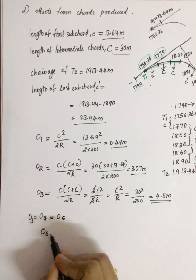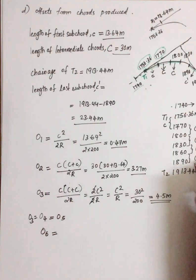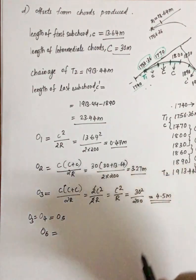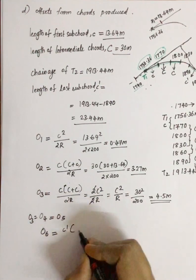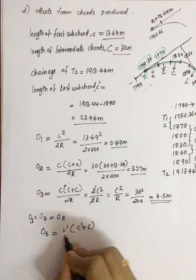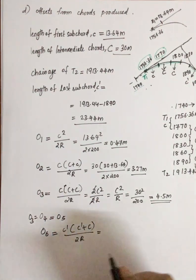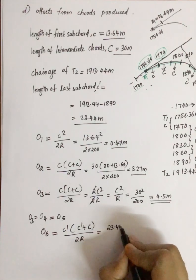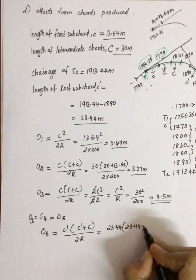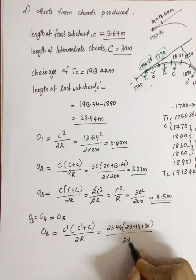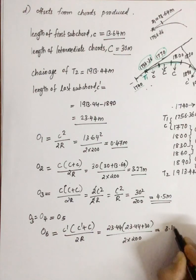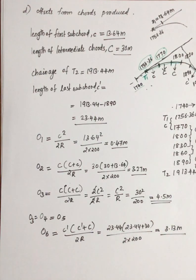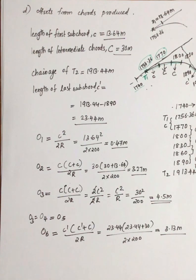For the last ordinate O6, the equation is C dash into C dash plus capital C, divided by two R. So it is twenty three point four four into twenty three point four four plus thirty, divided by two into two hundred, giving a value of three point one three meters. This is how we calculate the ordinates, or offsets from chords produced.